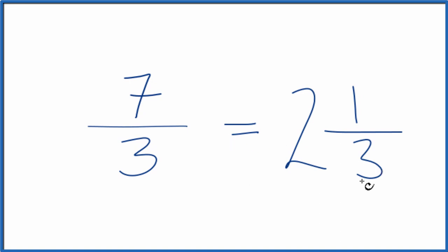So 2 and 1 third, that's the mixed number for the fraction 7 thirds. But in answer to our original question, the fraction 7 thirds is already in lowest terms.